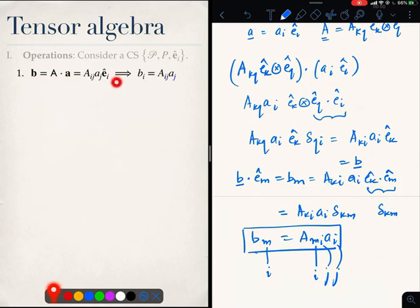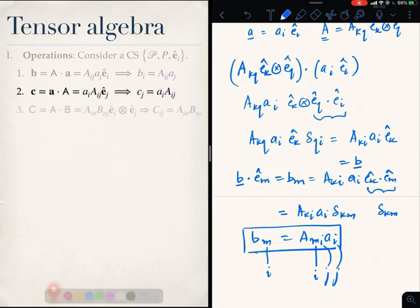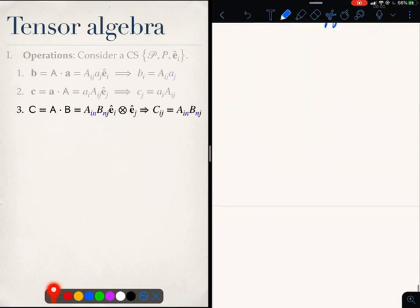So, that is how, beginning with an operation like this, we can get the components of b and relate it to the components of A. You can do the same thing with the right operation. I will leave it for you to do. What about if I have a multiplication of tensors, so A operates on B to create a new tensor C. How are the components of tensor C related to the components of A and B?